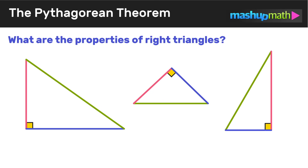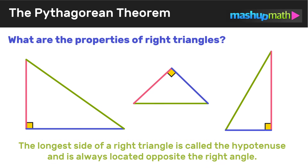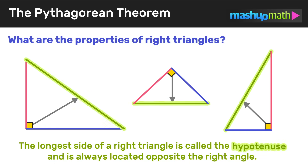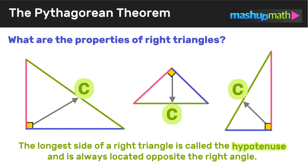Next, let's talk about the longest side of a right triangle. This side is called the hypotenuse, and it is always located directly opposite the right angle. In this lesson we are going to represent the length of that longest side — the hypotenuse — with the letter c.